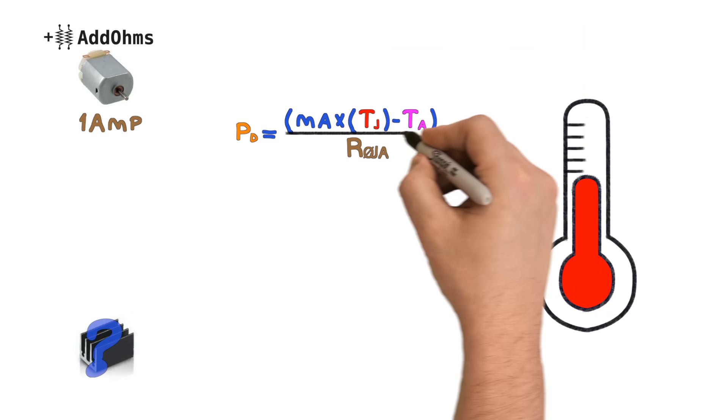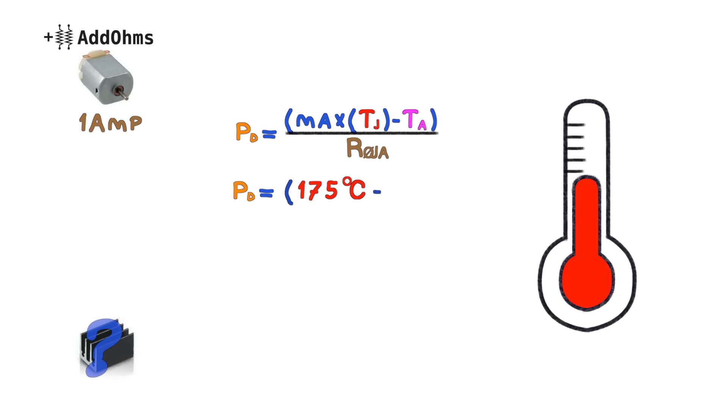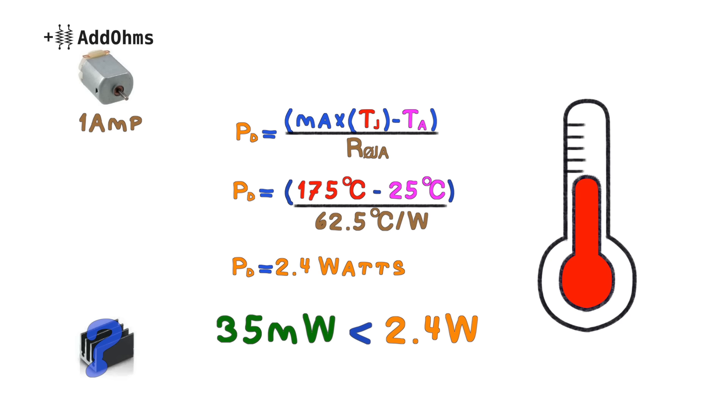Using this formula, we can calculate the maximum power the transistor can dissipate without using a heatsink. We take the maximum junction temperature minus the ambient temperature, which is going to be 25 degrees C, and divide by the thermal resistance. This gives a maximum dissipation of 2.4 watts. In our example, we are only dissipating 35mW, so we're safe to operate without a heatsink.